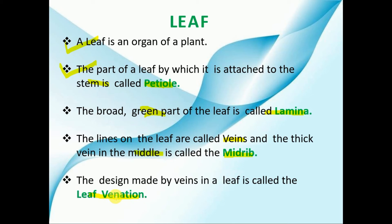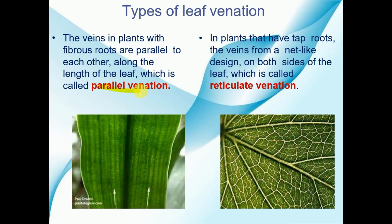Now we will explore one more important term, which is known as leaf venation. The design made by the veins in the leaf is known as leaf venation. We have two kinds of leaf venation: the first one is parallel venation, and the second one is reticulate venation. In parallel venation, the veins are arranged in the form of parallel lines. This type of venation is known as parallel venation, as you can observe the parallel lines over the leaf.